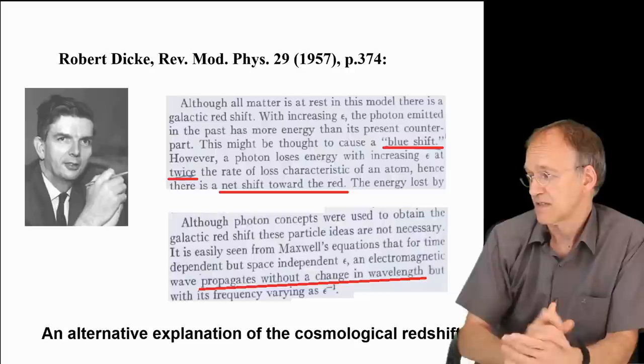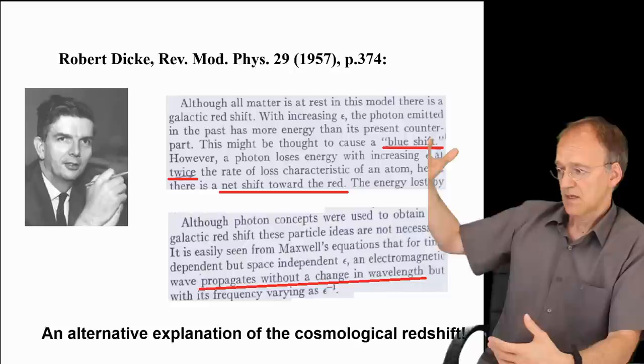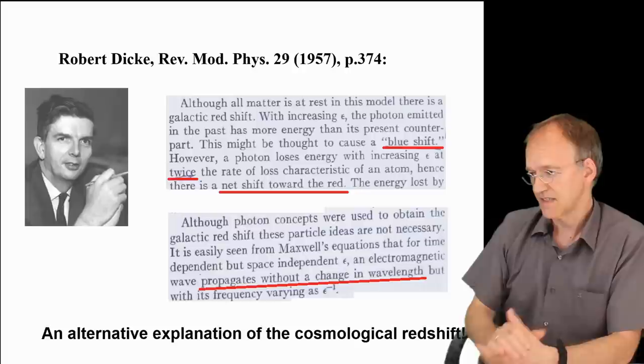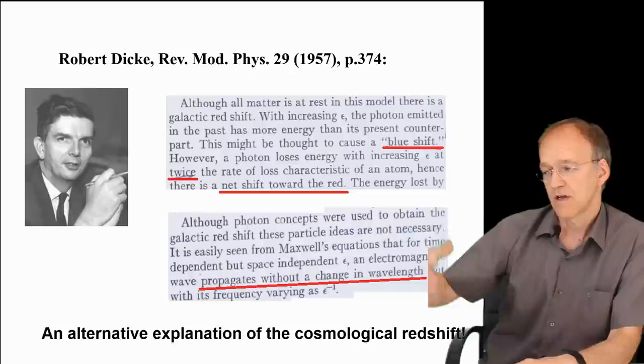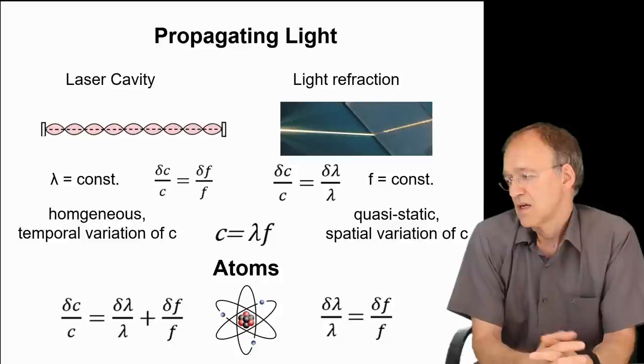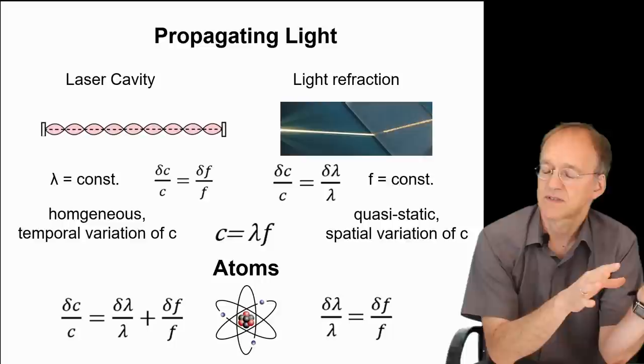Basically, light from the beginning of the universe, which is emitted from very distant galaxies, maintains its wavelength. Since all the reference wavelengths of the atoms shrink in a variable speed of light cosmology, we perceive the light of distant galaxies as redshifted. This is the mechanism.